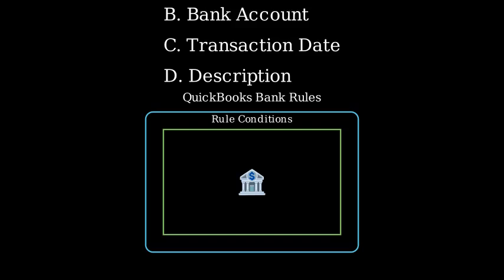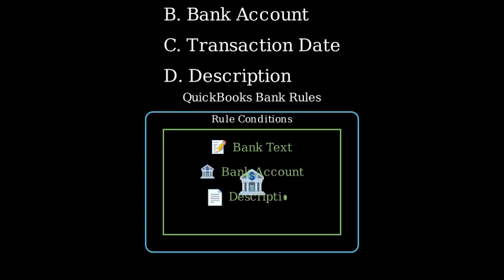Let's look at what criteria can be used in bank rules. First, bank text can be specified — this allows you to match specific text that appears in your bank feed. You can also specify the bank account for the rule to apply to, and description is another valid criteria you can use to match transactions.